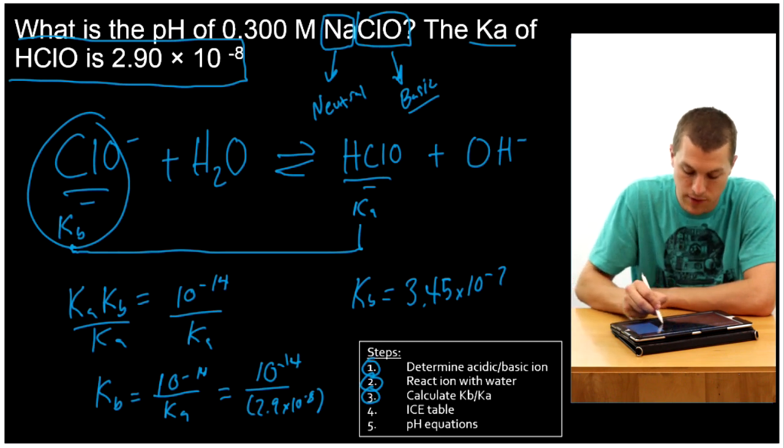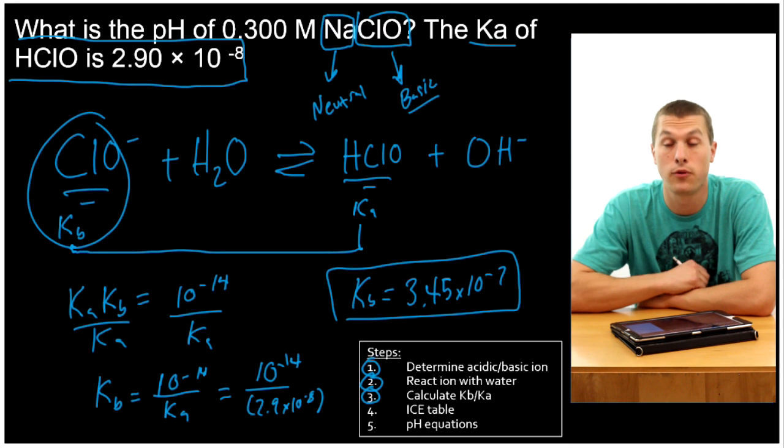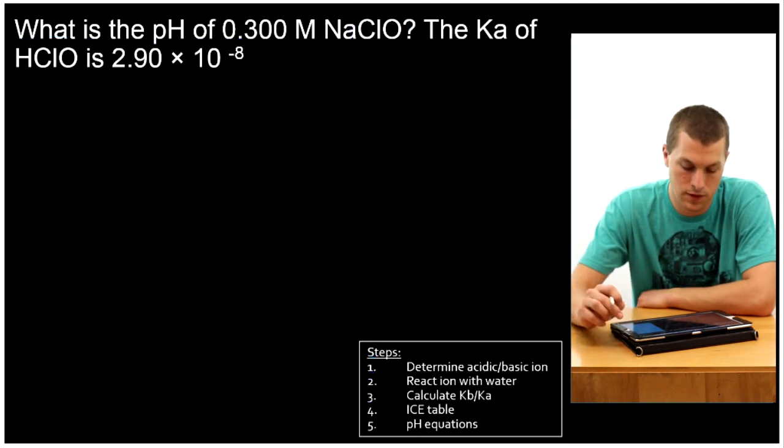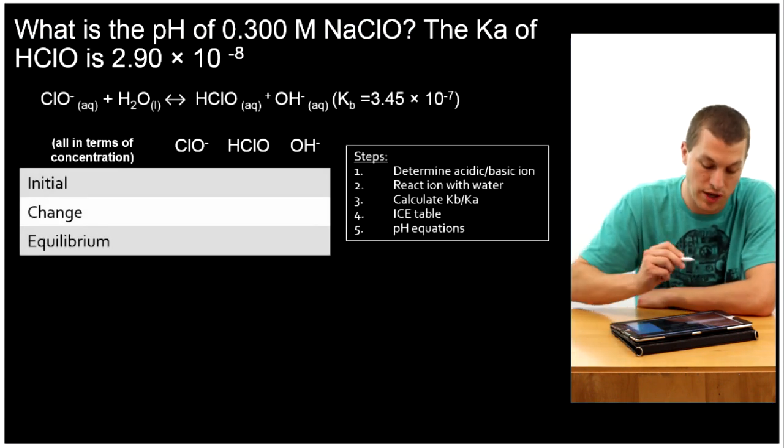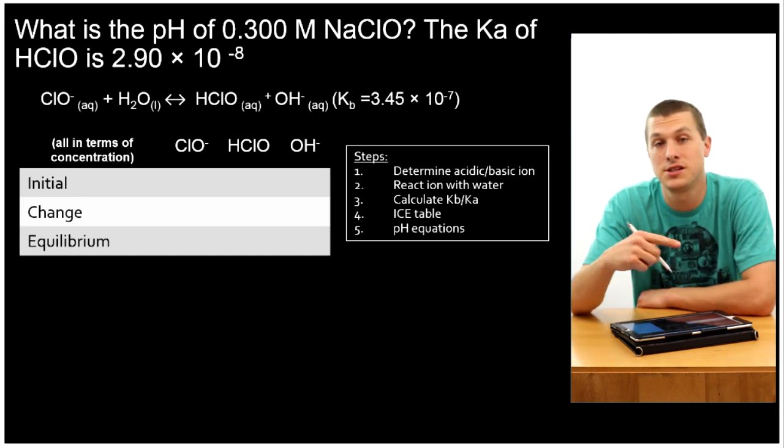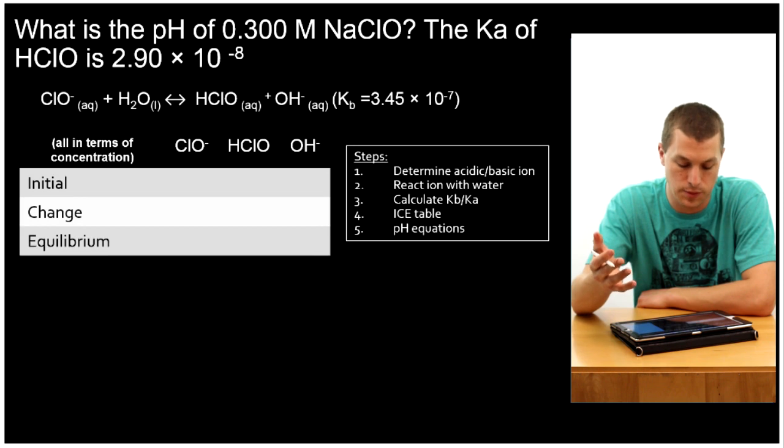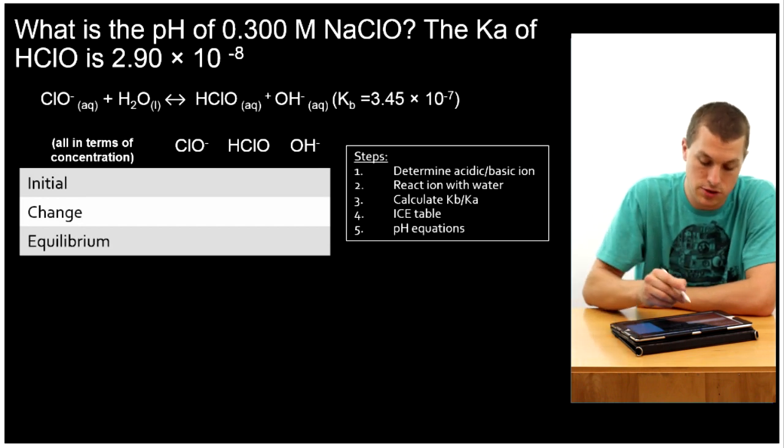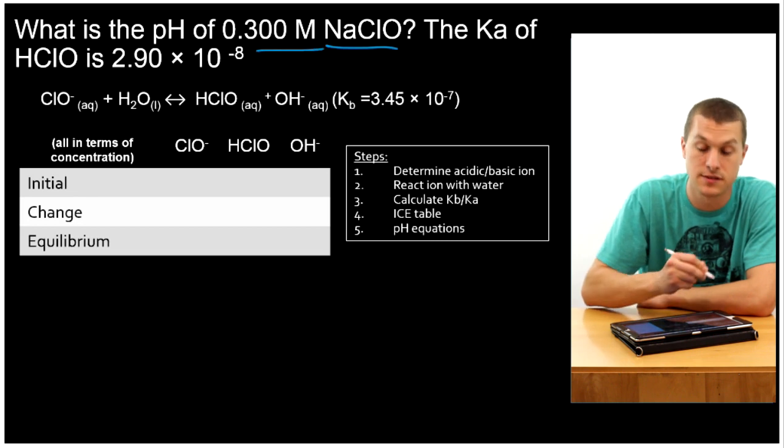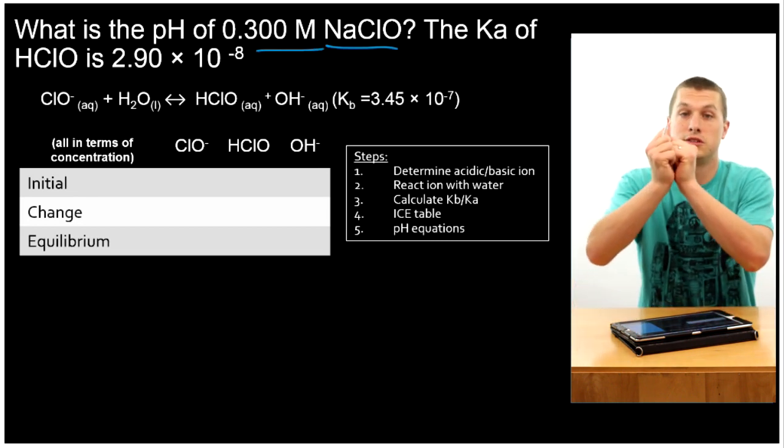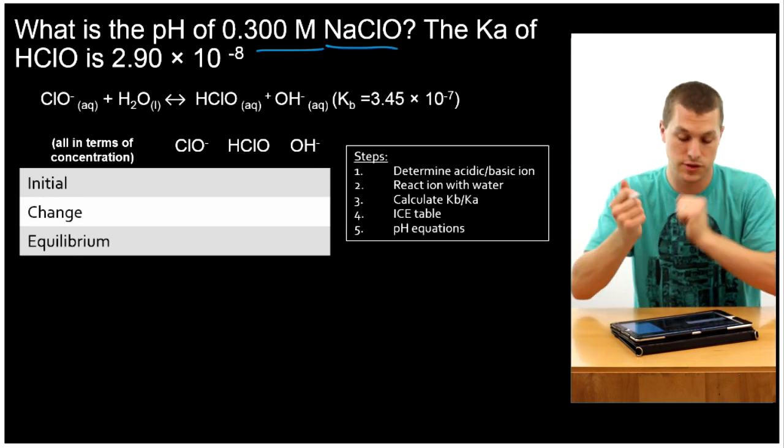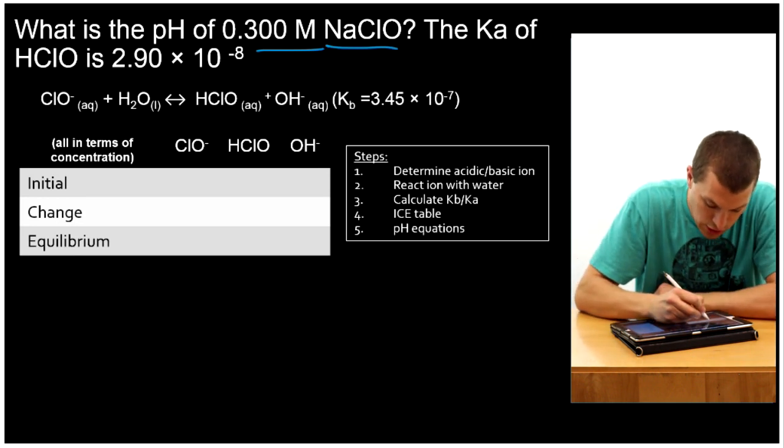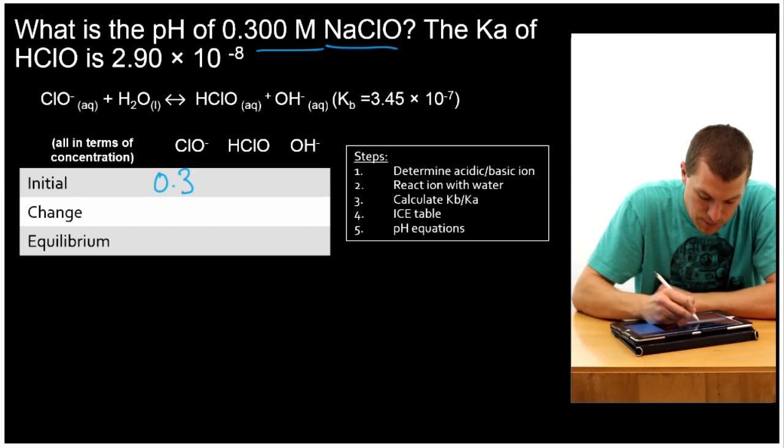So now that we have the equilibrium constant for our reaction, and we have the reaction, we're ready to go to step four, which is an ICE table. So I've started here with the information we already determined, our equation with Kb. And now that you have the reaction and Kb, it's pretty much identical to a weak acid or base problem. We're going to determine the initial, the change, and the equilibrium concentration of all of these reagents. Our initial concentration of ClO- is the same as our sodium hypochlorite concentration, because the sodium and the chloride fall apart, so their concentrations are the same. So my initial ClO- concentration is 0.3. And then because they're products, HClO and OH both start at zero.